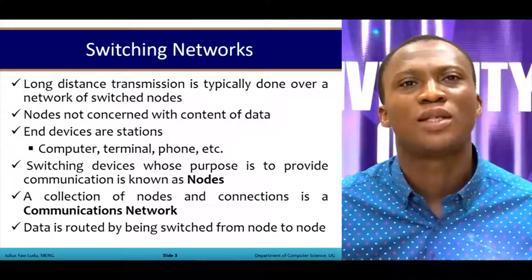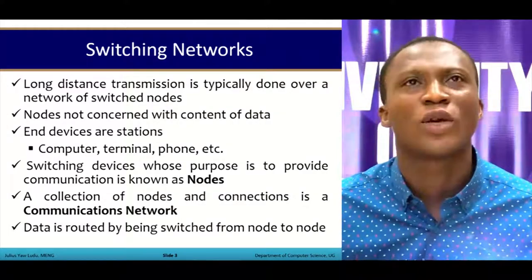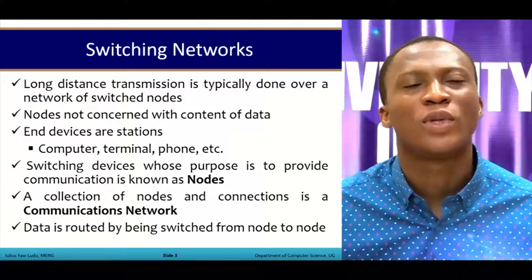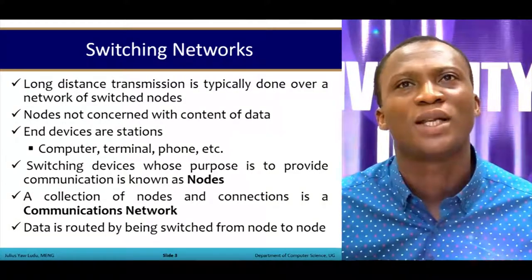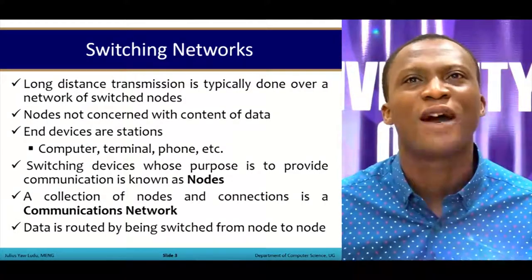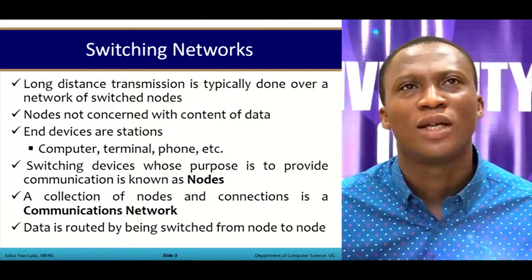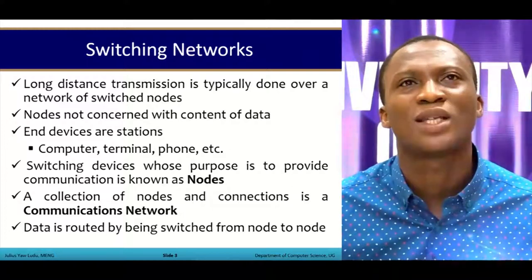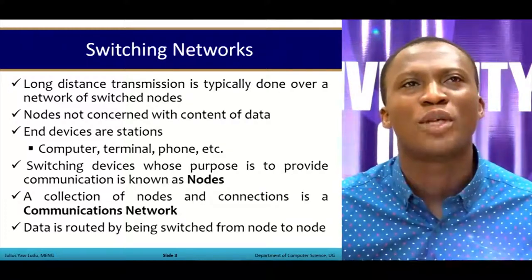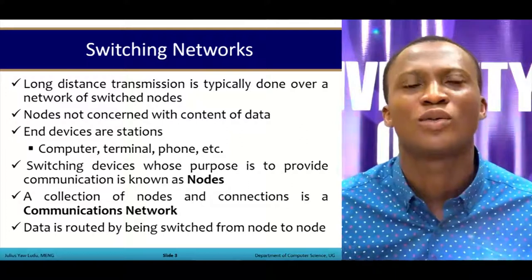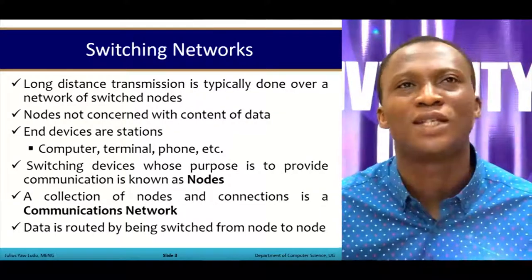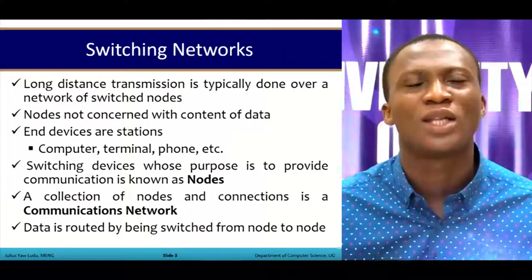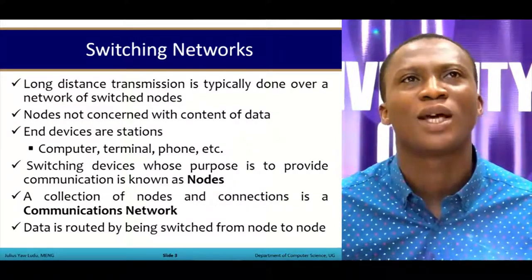Long distance transmission is typically done over a network of switch nodes. Nodes are not concerned with the content of the data, but with the device that does the switching. We are going to talk about end devices, also known as stations. Examples can be your computer, your terminal, your telephone, your fridge — anything that can be connected becomes an end device.